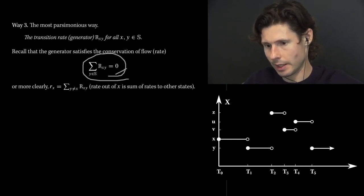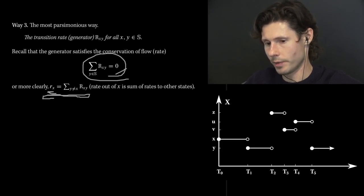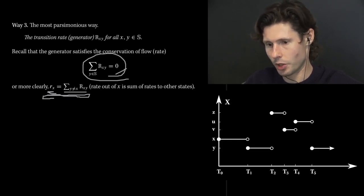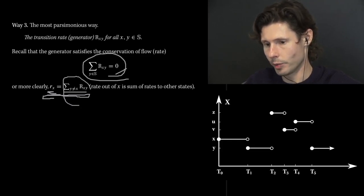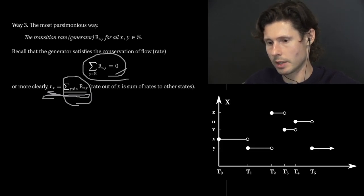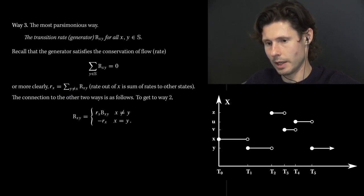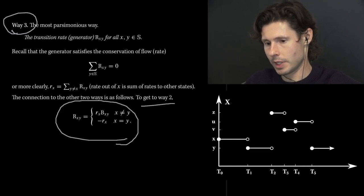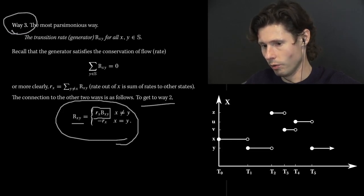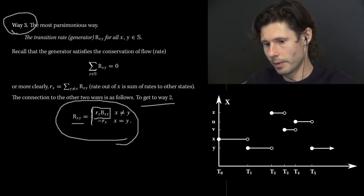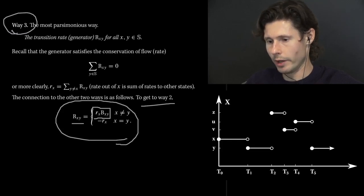One way to remember this identity: it's saying that the rate out of state x — which is the diagonal entry of the matrix R — is the same as the total sum over all the rates out. It's very sensible: if you want the rate of transitioning out of state x, all you need to do is sum up over all the possible rates to which you can go. We can connect way 3 to way 2 using this identity: the transition rate from x to state y is the total rate out of state x discounted by the transition probability in the embedded chain to state y.